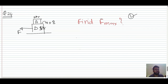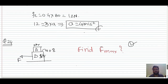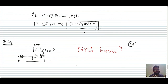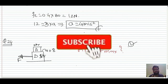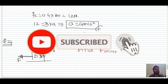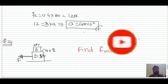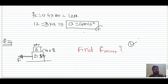For the last question, find the maximum force: acceleration is already calculated, so total force = (5 + 2) × a = 7 × a. Try to solve it and comment your answer in the comment box — I'll reply as soon as possible. Thank you so much!